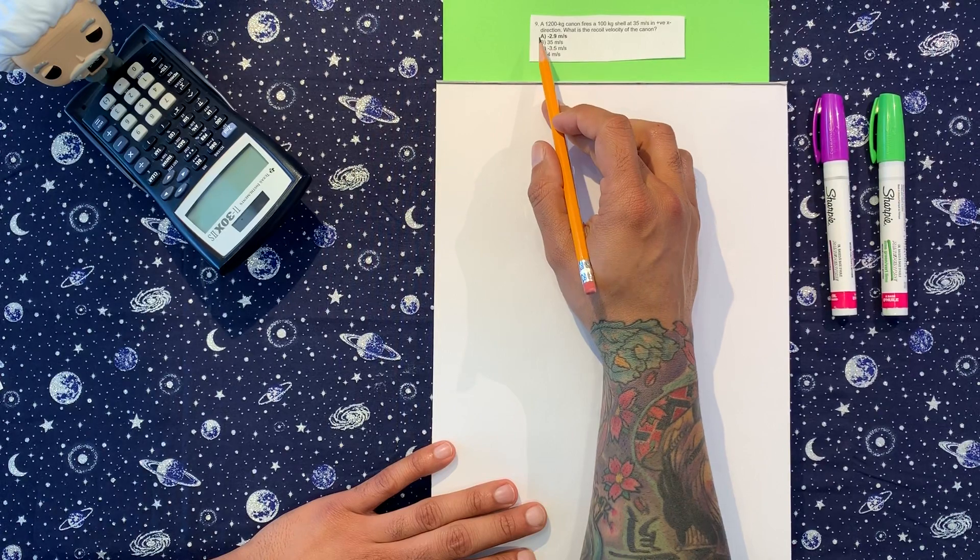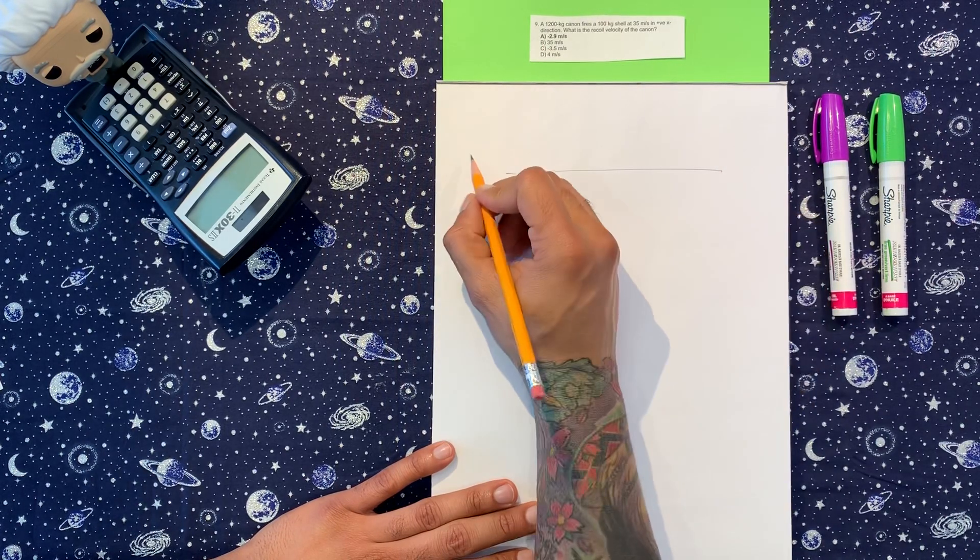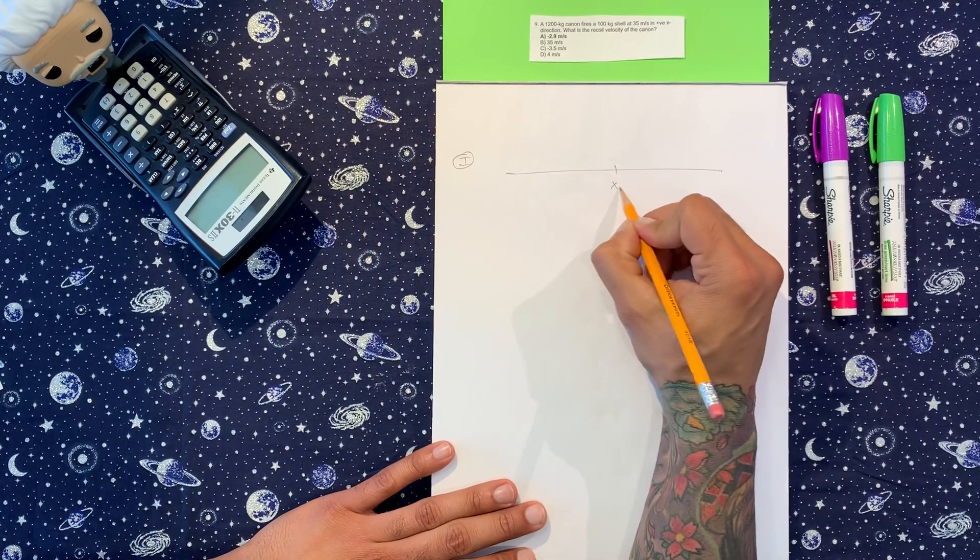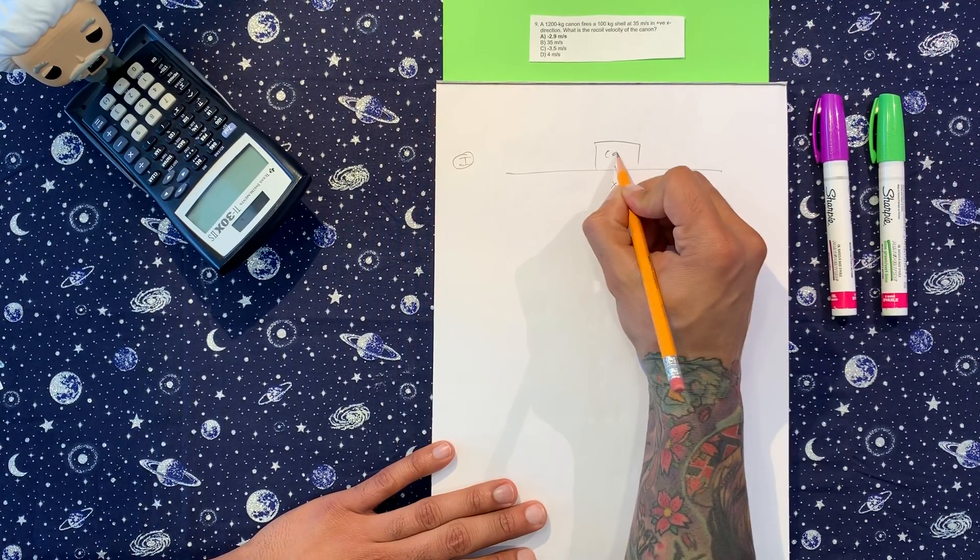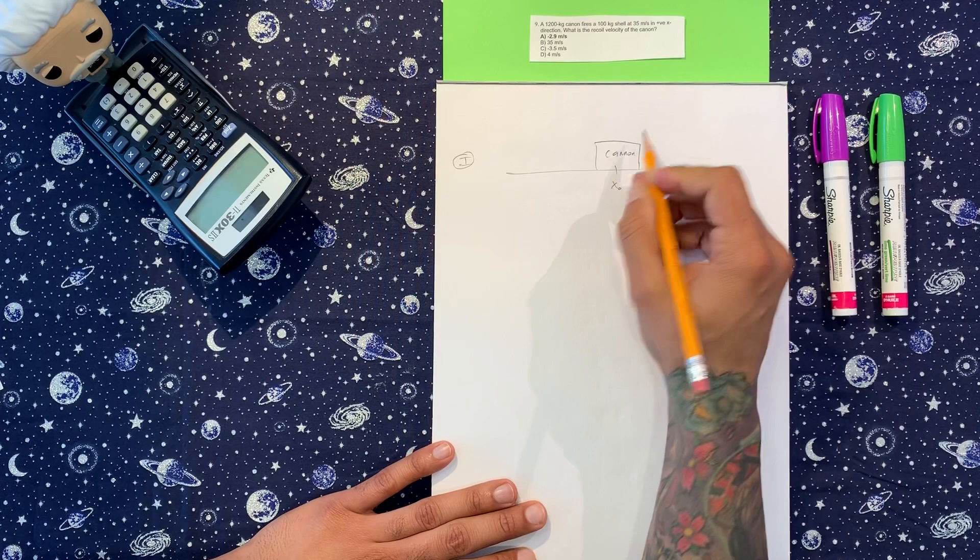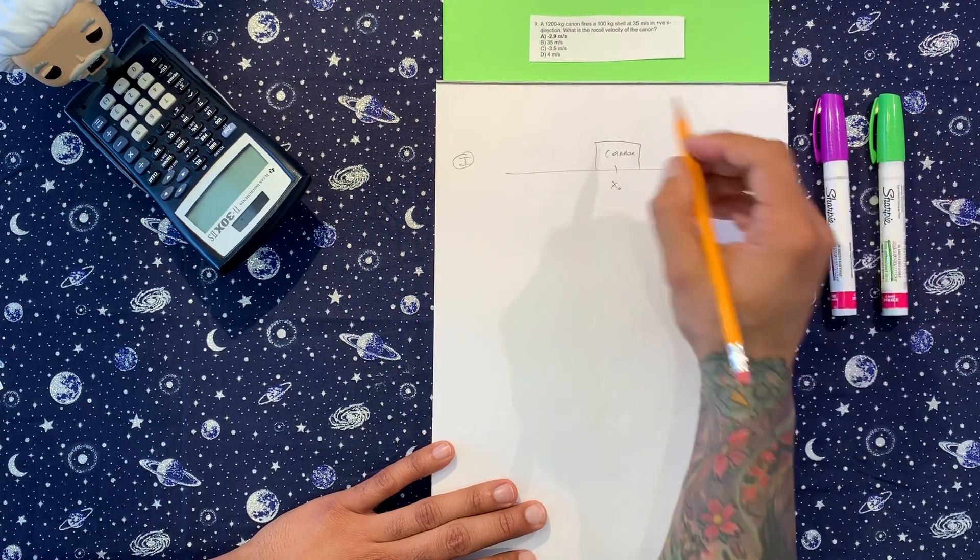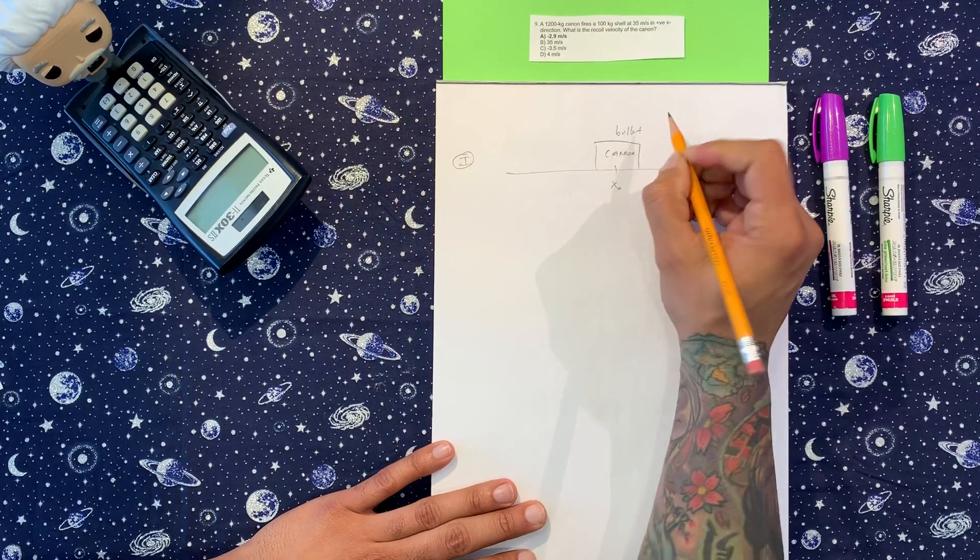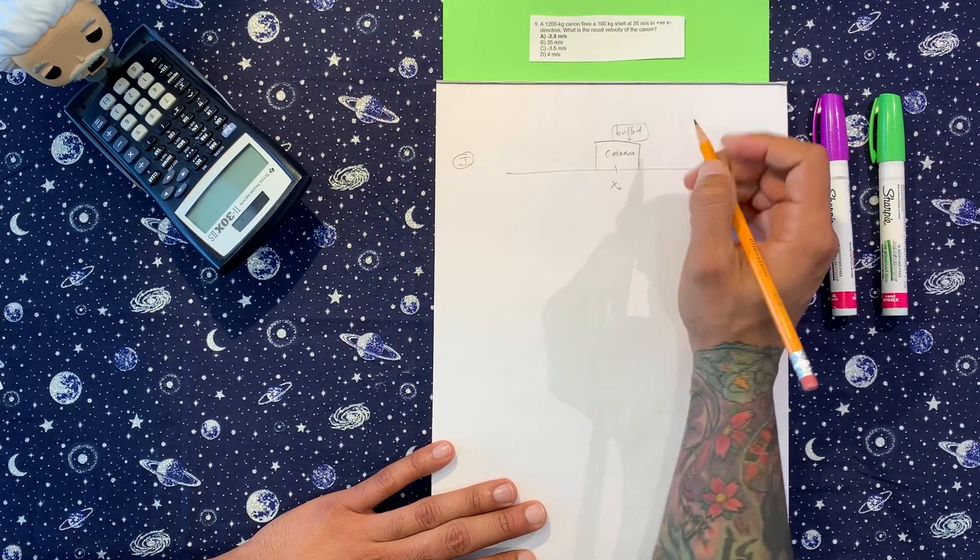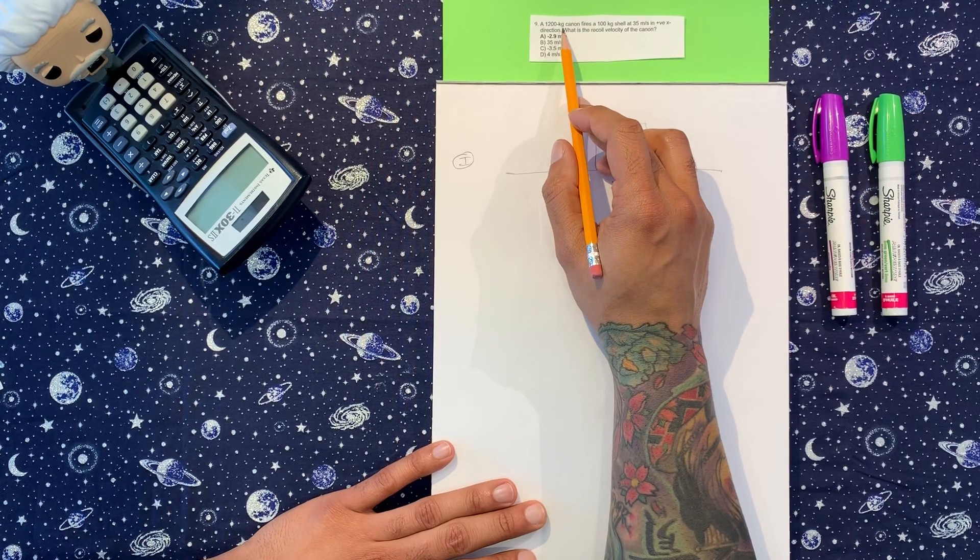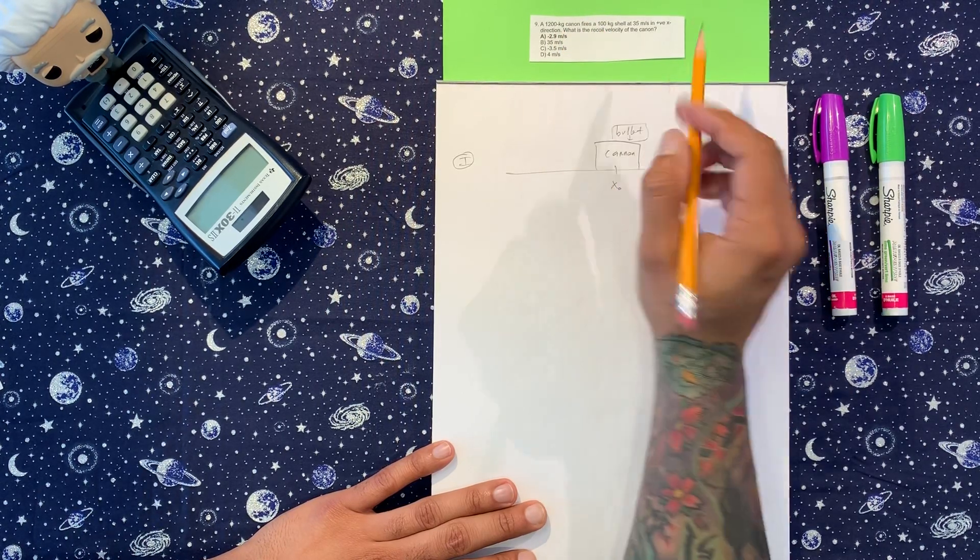So let's draw a picture. We have, okay, this is the first scene. Here is going to be x initial. We have a cannon. Let's see, and the bullet is inside the cannon. 1,200 kilograms, good on the units, 100 kilograms for the bullet, good on the units.